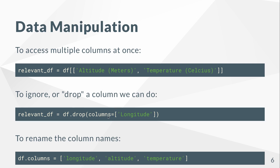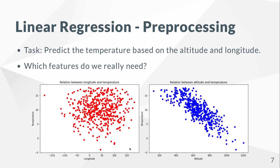If you want to access multiple columns, you have to use double brackets with the strings. To drop a column or ignore it, you can use the drop function along with a column argument. To rename columns, we change the value of the columns attribute. We change the names because we don't want to write out the full 'temperature celsius' string whenever we want to access the temperature, so this makes our lives easier.